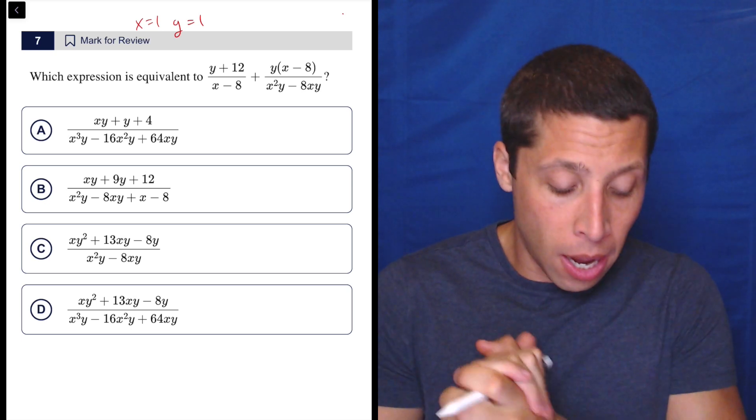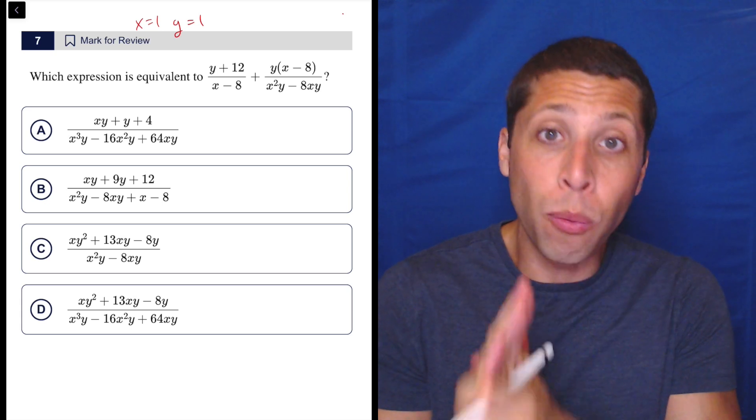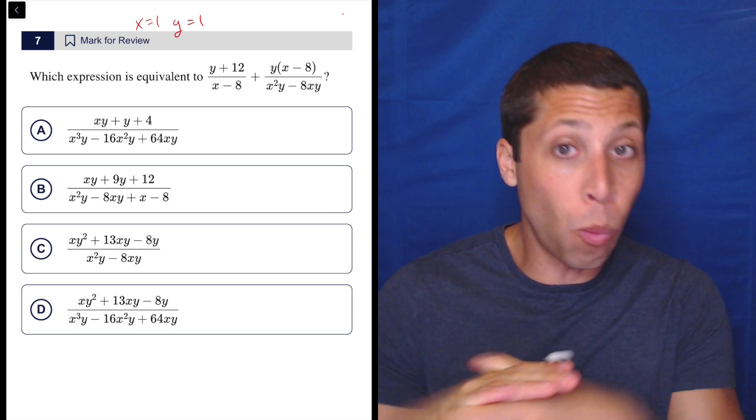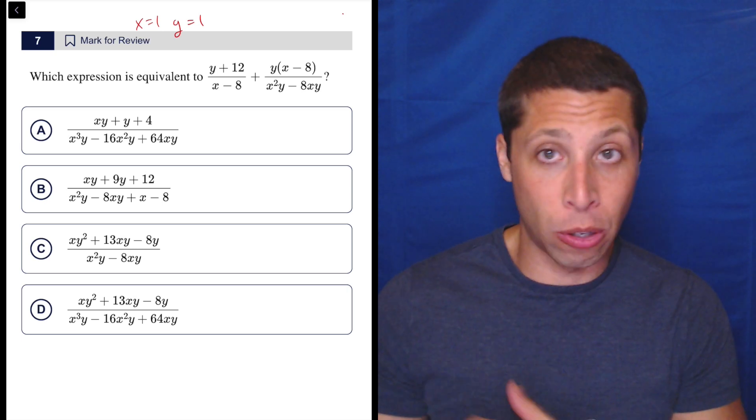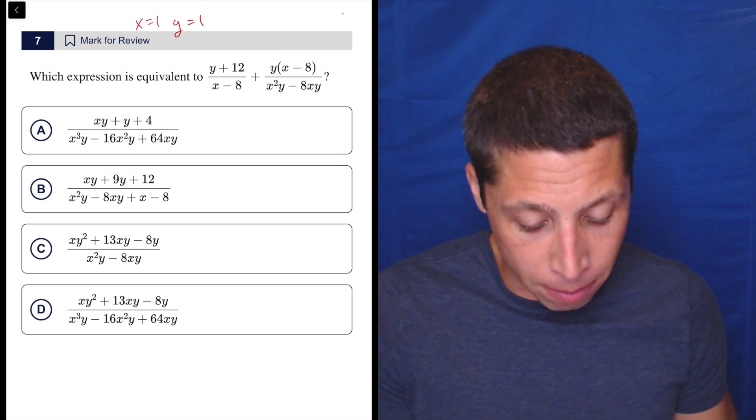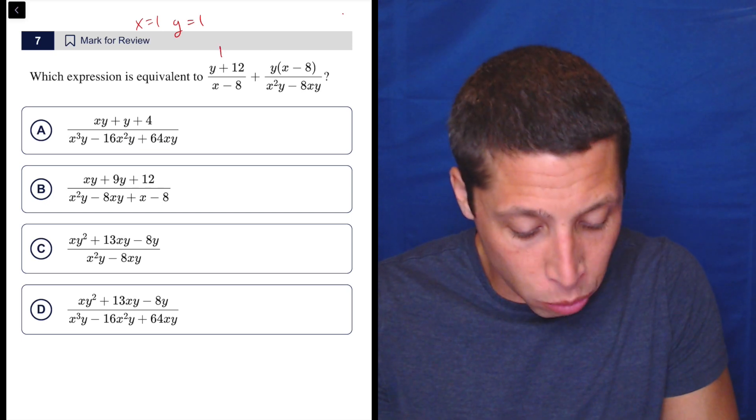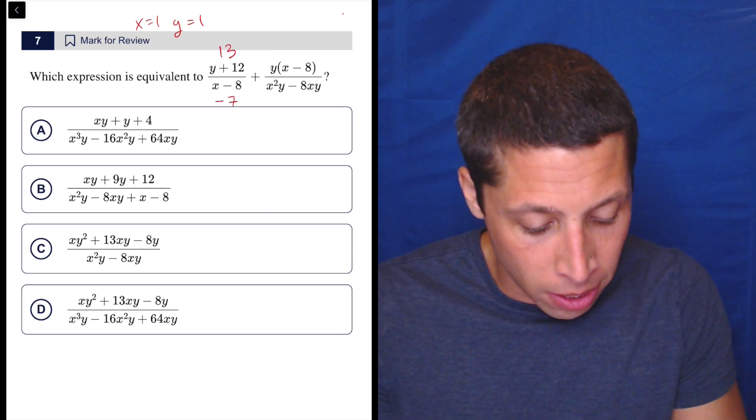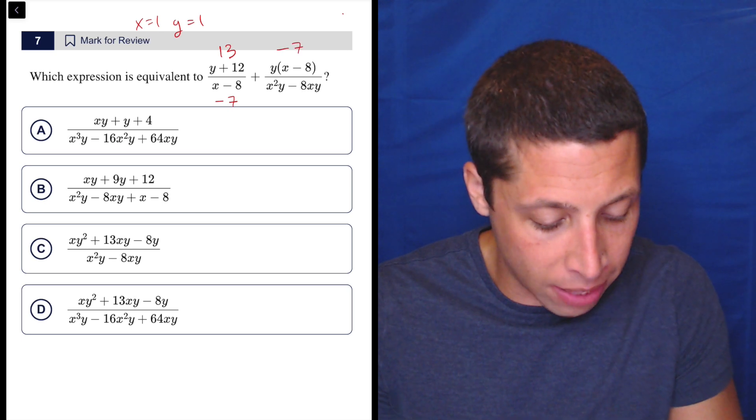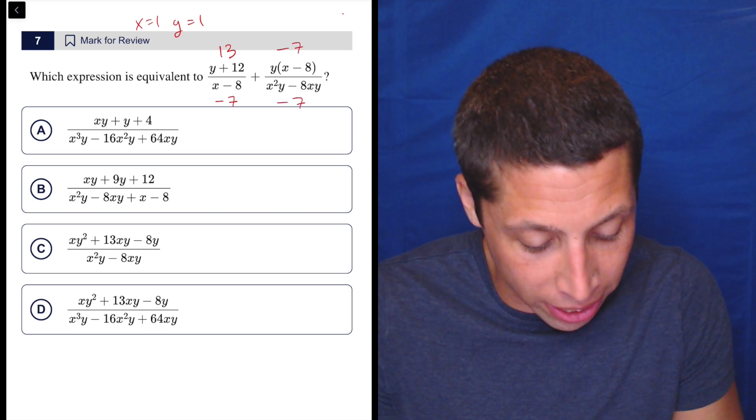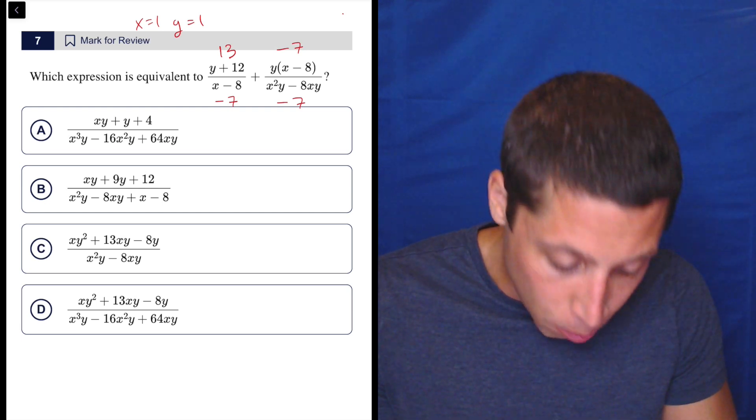So let's see. We're going to put one in. And the benefit of one, especially when we have a lot of exponents, which I see in the answer choices, is that one doesn't have any sort of properties when we have exponents. So I can almost ignore that aspect of the question. So when I put this in, I'm going to get one plus 12 is 13 over negative seven, one minus eight. One times negative seven is negative seven, and one minus eight, notice how all this multiplication goes away, is also negative seven.